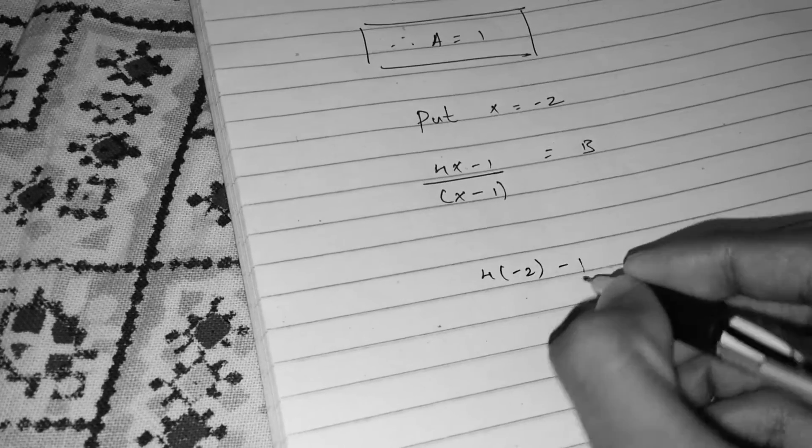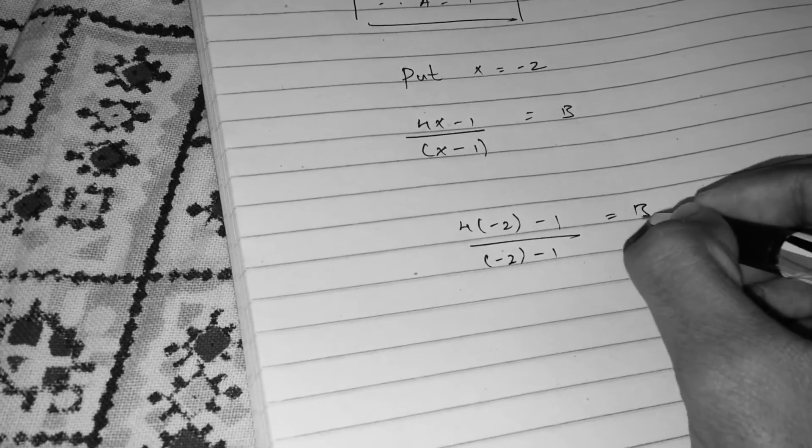4 into minus 2 minus 1 divided by minus 2 minus 1 is equal to B. This turns out to be minus 9 divided by minus 3 is equal to B.